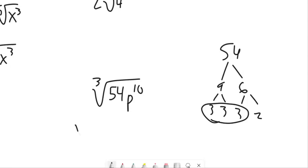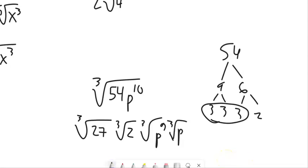So you could say this is the same as the cube root of 27 times the cube root of two. And then let's take a nine out of this. Cube root of p to the ninth. That was supposed to be a p. Cube root of p.